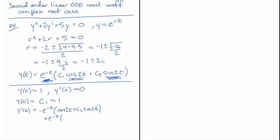That's the cosine of 2t, gives us a minus 2 sine of 2t. And then plus c2 derivative, there's a 2 in front there. So we have 2 times c2 times the cosine of 2t.